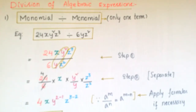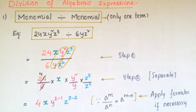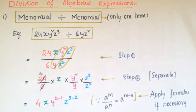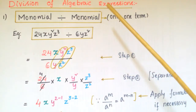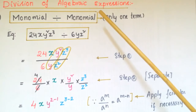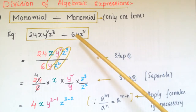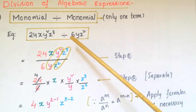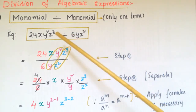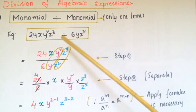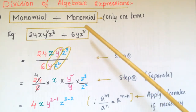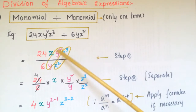Hello everyone, today I am going to explain division of algebraic expressions. The first one is division of a monomial by another monomial. Monomial means the expression should have only one term. Here is the example: 24xy² z³ divided by 6yz²— these two are monomials.